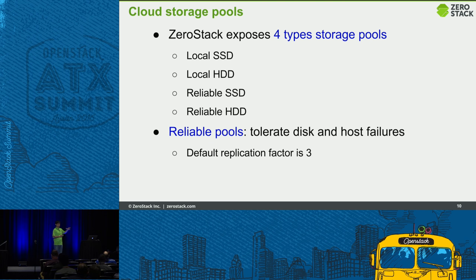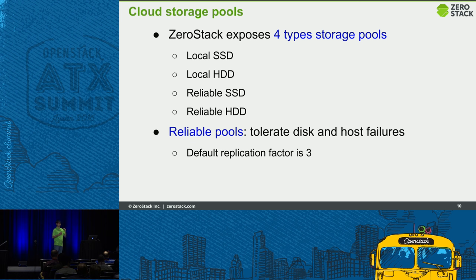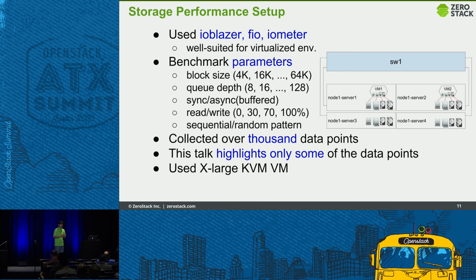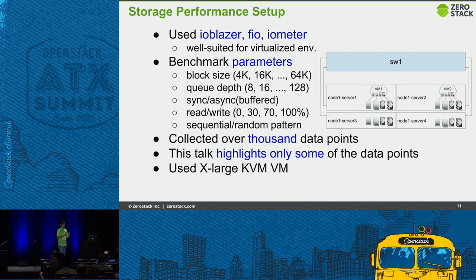In ZeroStack storage, we expose by default four types of pools: local SSD, local HDD, replicated SSD, and replicated HDD. Our replication level is three, which tolerates disk-level as well as host-level failure. For storage benchmarking, we tried IOBlaze, FIO, and IO Meter, and concluded that for Linux-based virtualized environments, IOBlaze is well-suited. All storage numbers shown here are IOBlaze-based.